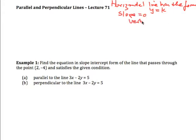And a vertical line has the form x equals k where k is a constant and a slope which is undefined.